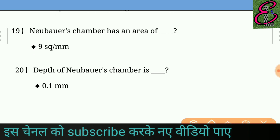Question number twenty: The depth of the Neubauer chamber is — answer: 0.1 mm.